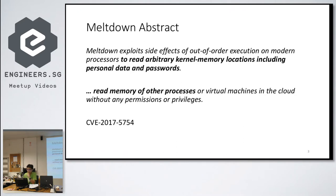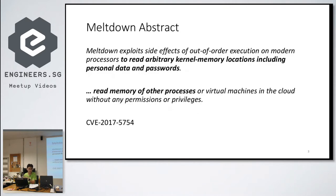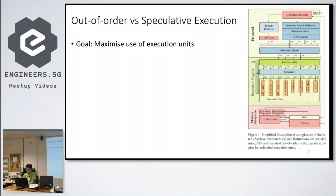The Meltdown paper says it explores the side effects of out-of-order execution on modern processors and can be used to read arbitrary kernel memory locations, and also memories of other processes. The Spectre abstract says attacks involve inducing a victim to speculatively perform operations that would not occur during correct program execution, and leak the victim's confidential information. Note that the word 'kernel' is not inside the Spectre abstract — Meltdown is more on the kernel side.